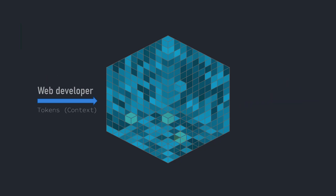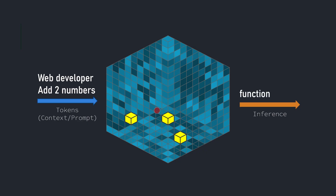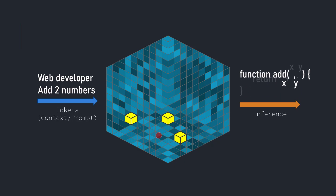And the same is true for code. If I say 'web developer' and then 'add two numbers,' I've probably lit up a bunch of JavaScript. So the output I get, even without saying JavaScript, probably will be a JavaScript function — not C#, not Java, maybe not Python. Because the words I've given it, the lighthouses that I've lit up, are encouraging it to travel in that direction as it mathematically produces output based on probabilities.